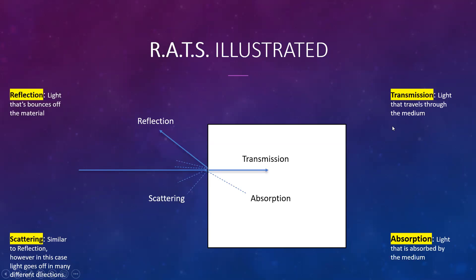We have transmission, which is the light that travels through the medium — this is also an example of refraction, as we saw in previous slides where light goes through a lens at a different angle, though here we just have it going straight through. And absorption is light that is absorbed by the medium, though in most instances we don't deal with this.